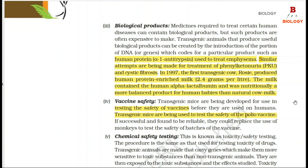4. Vaccine Safety: Transgenic mice are being developed for use in testing the safety of vaccines before they are used on humans. Transgenic mice are being used to test the safety of the polio vaccine. If successful and found to be reliable, they could replace the use of monkeys to test the safety of batches of the vaccine.